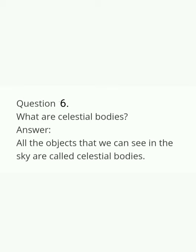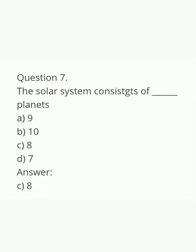Question six: What are celestial bodies? Answer: All the objects that we can see in the sky are called celestial bodies. Question seven (MCQ): The solar system consists of how many planets? Options: nine, ten, eight, seven. The answer is eight — option C is correct.